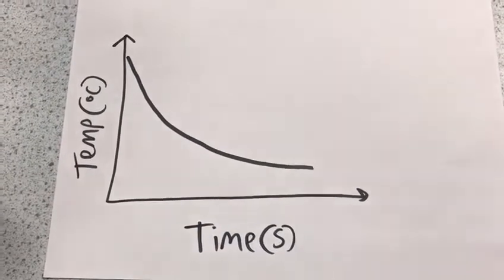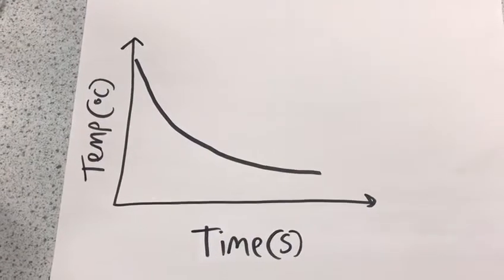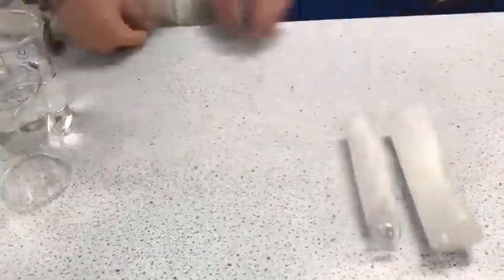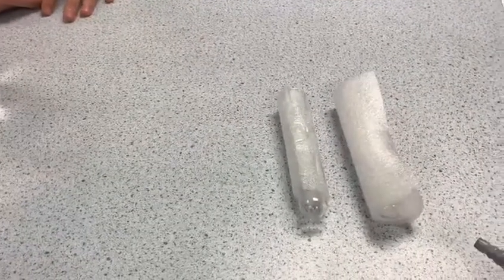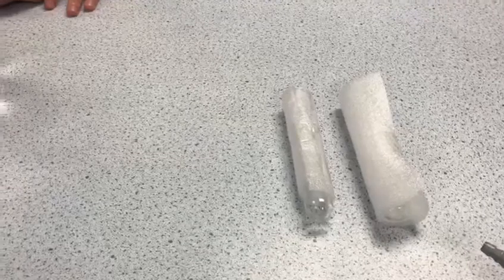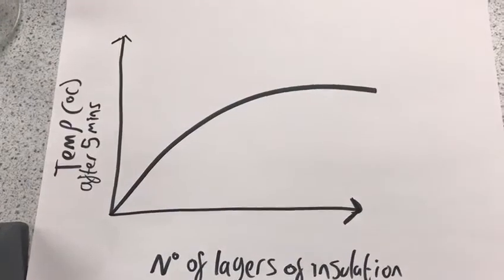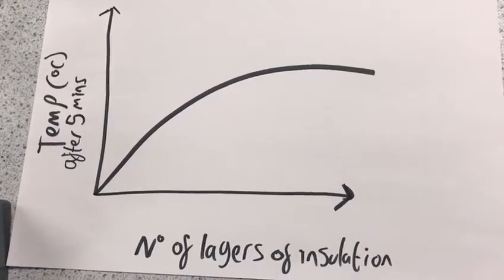There are other things we can look at as well. You can look at how the number of layers of insulation affects temperature. That is where our boiling tubes with two layers and one layer come in. You can do one at a time, record the results in a table, and then record them on a second graph. As the number of layers of insulation increases, the temperature remains higher with more insulation.